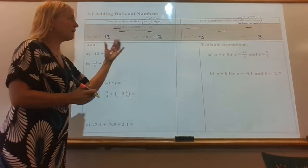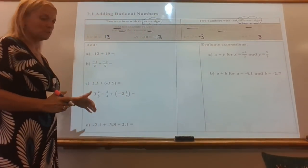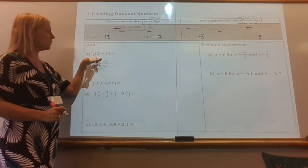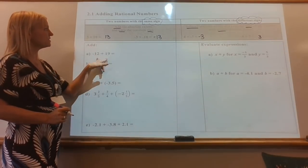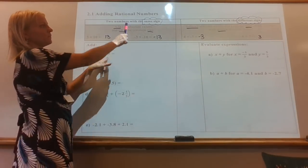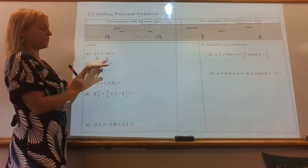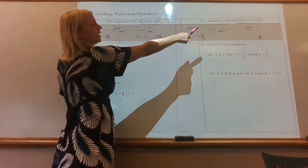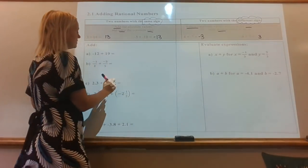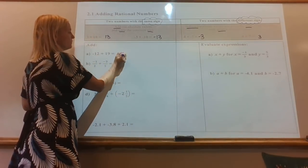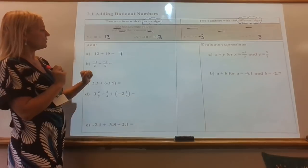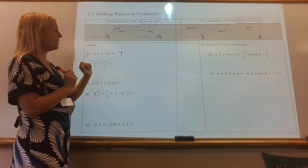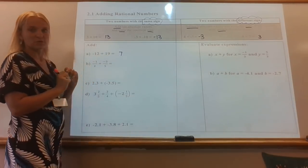Those are the rules, so now let's apply them to some various problems. The first one is just integers: negative 12 plus 19. First thing I want to ask myself — are they the same or are they different? They are different: one's negative and one's positive. So since they're different, I'm going to subtract them. 19 take away 12 would make 7, and the larger number is positive, so it would be positive 7 since 19 is larger than 12.